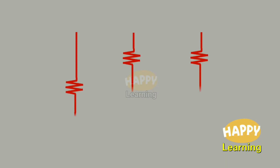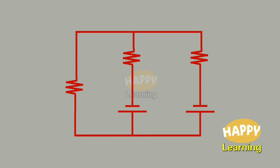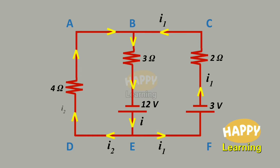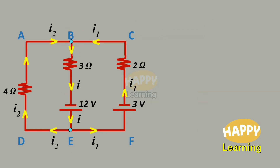So, this is the circuit. There are 3 resistors, 2 batteries — 6 ohms, 12 volts, 3 volts, 4 ohm, 3 ohm, 2 ohm — and these are the current directions. I is the current from the 12-volt battery, I1 and I2 in their branches, and we have 2 junctions, B and E.